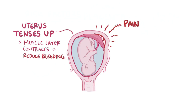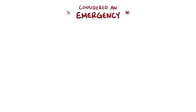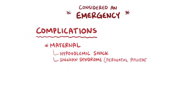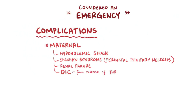Given that placental abruption leads to a serious loss of blood from large vessels, it's considered an emergency. Maternal complications include hypovolemic shock, Sheehan syndrome — which is a type of perinatal pituitary necrosis that results from hypovolemia — as well as renal failure. Disseminated intravascular coagulation, or DIC, is also a possible complication, since the decidua basalis layer is rich in thromboplastin, so an abruption causes the release of large quantities of thromboplastin which causes widespread clotting.